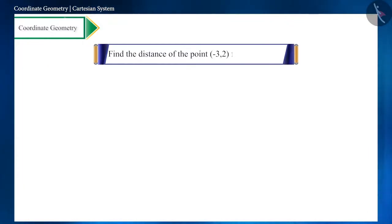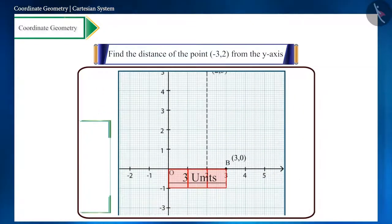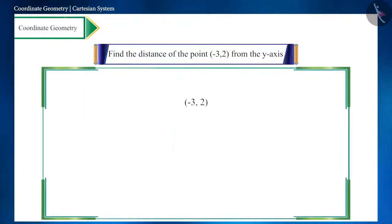Find the distance of the point (-3, 2) from the y-axis. Friends, we have seen that the distance of any point from the y-axis depends upon the x-coordinate of that point. Here the x-coordinate is -3, so...